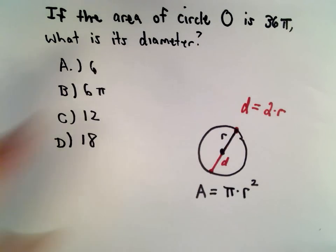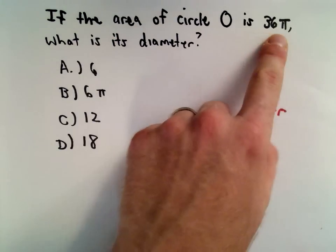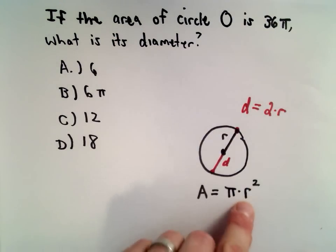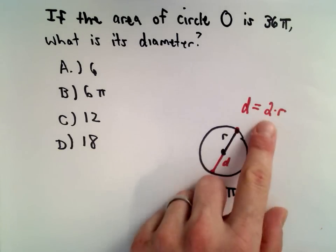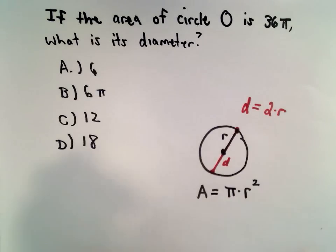So the idea is we can use this information. We know the area is 36π. We can use that to help us solve for the radius r, and then once we know the radius r, we'll just simply multiply it by 2 to get the diameter.